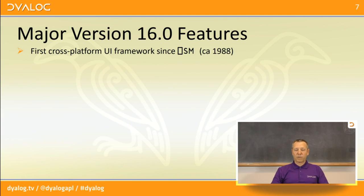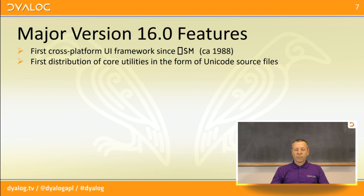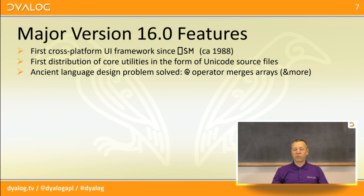One of the most important firsts is that for the first time since 1988, when we released Quad SM, we are providing a cross-platform user interface framework that we intend to make available on all platforms where APL is available. It's also the first version of APL where we are really distributing core utilities and tools in the form of Unicode source files — the first time they are really becoming key components of the system.